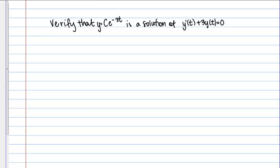In this example, we're going to verify a solution to a differential equation, but instead of a specific solution, we're going to verify what's called a general solution. A differential equation is going to have a family of functions that satisfies it — this comes from when you integrate a function, you end up with a family of functions as the answer. Remember the plus c? This is the same idea. So here, we're given the general solution y equals ce to the negative 3t, where c represents any constant, and we want to verify that it's a solution of y prime of t plus 3y of t equals 0.